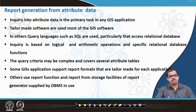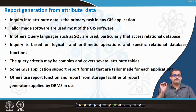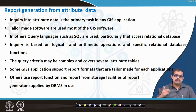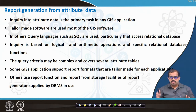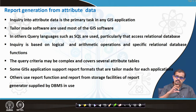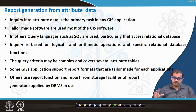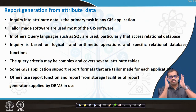When looking at inquiry based on logical and arithmetic operations, specific relational database functions are used. The query criteria may be complex and cover several attributes — it can be on a single attribute, it can be on multiple attributes, or it can be on all attributes in that particular table. For example, if your attribute table has 10 attributes, your query can be on only one attribute, like area.